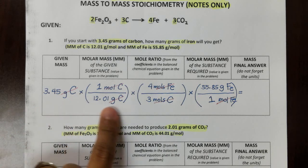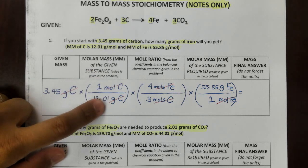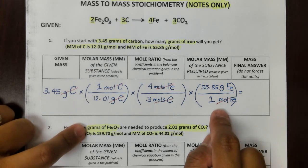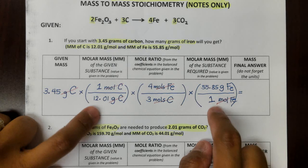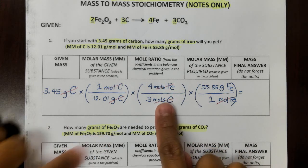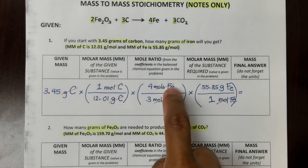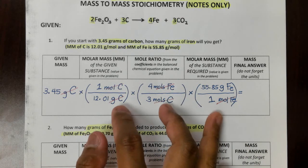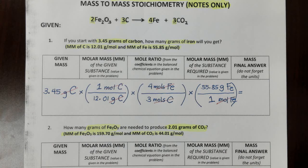Looking at the entire solution: in the first molar mass, 1 mole is on top and grams is below. In the second molar mass, grams is on top and 1 mole is below — they have different orientations. The mole ratio in the middle follows the concept that the substance below matches the given, and the substance on top leads to what we're solving. I hope you understand the entire outline for this mass-to-mass conversion.